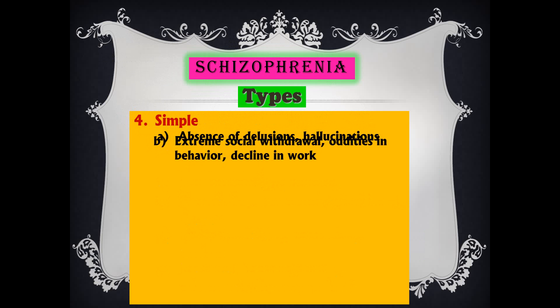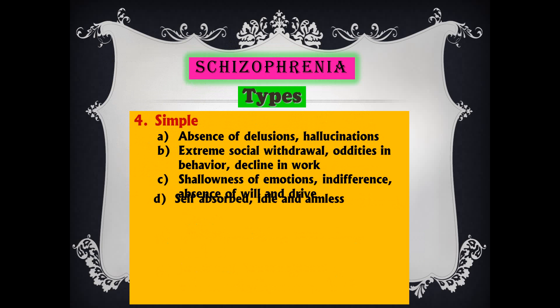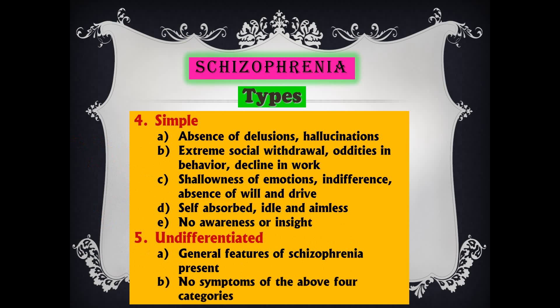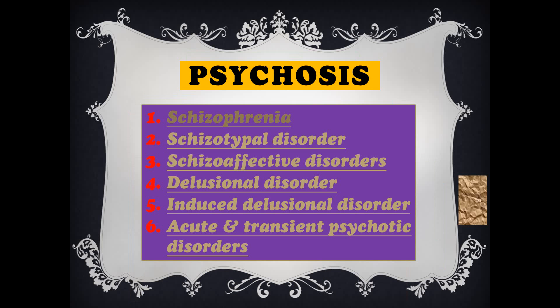Simple type: absence of delusion and hallucination, extreme social withdrawal, oddness of behavior, decline in work, shallowness of emotion, indifference, absence of will and drive, self-absorbed, idle and aimless, and no awareness or insight — when brought to the doctor the patient says 'I don't have any problem.' Undifferentiated type has general features of schizophrenia but symptoms are not very clear. Classically there are four varieties; undifferentiated is the fifth.